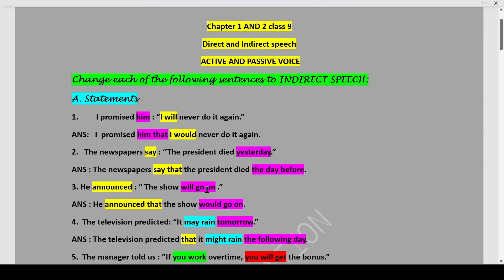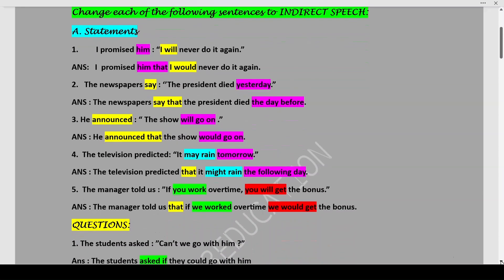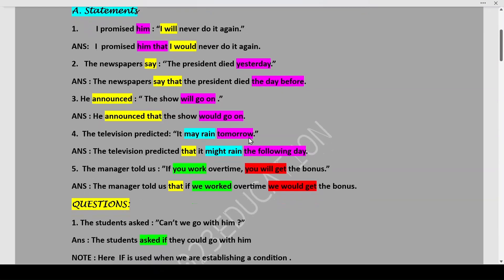He announced the show will go on. He announced that the show would go on. The television predicted it may rain tomorrow. The television predicted that it might rain the following day. May rain becomes might rain. Tomorrow becomes the following day. The manager told us if you work overtime you will get the bonus. The manager told us that if we worked overtime we would get the bonus because we are reporting what the manager told us in indirect speech. As you can see you work becomes we work and you will get becomes we would. These were changing direct speech to indirect speech for statements.